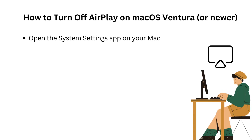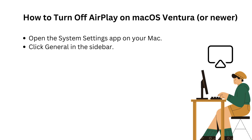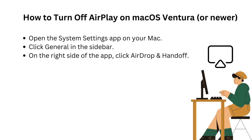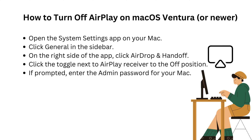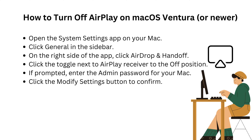Open the System Settings app on your Mac. Click 'General' in the sidebar. On the right side of the app, click 'AirDrop and Handoff'. Click the toggle next to 'AirPlay Receiver' to the off position. If prompted, enter the admin password for your Mac. Click the 'Modify Settings' button to confirm.